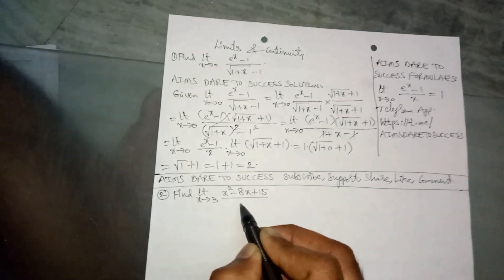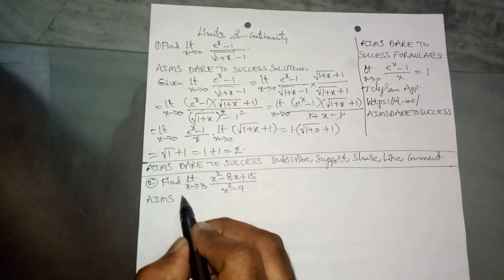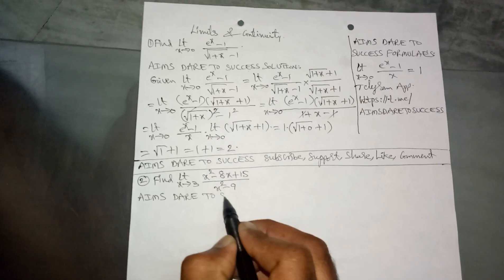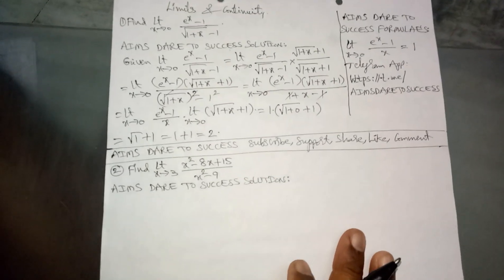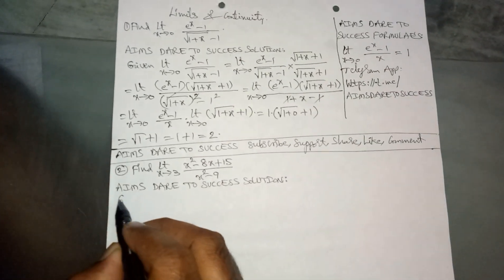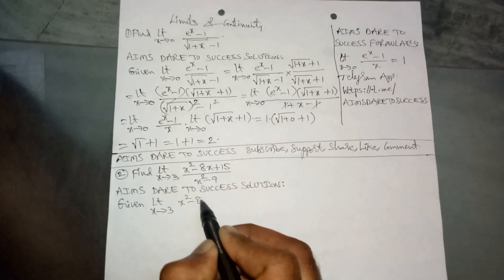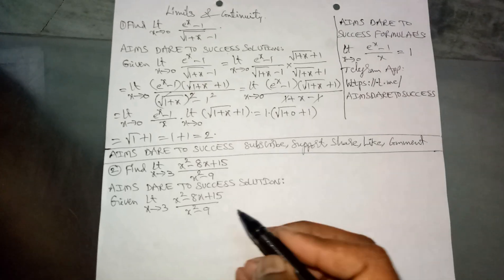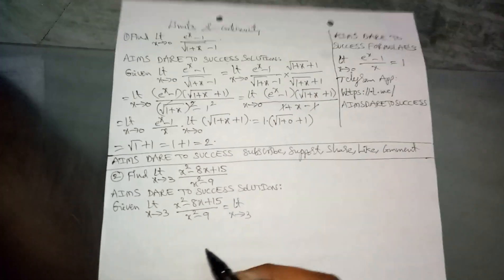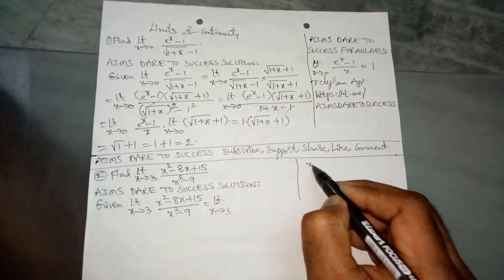This question's solution can be written by using factorization. First, write the given expression: limit x tends to 3 of (x² - 8x + 15) by (x² - 9). For the numerator, the first term and last term give x² multiplied by 15, which equals 15x².